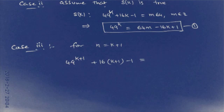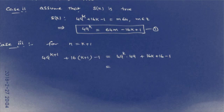Since a^(m+n) = a^m × a^n, we can write 49^(k+1) as 49^k × 49. Multiplying out 16(k+1), we get 49^k × 49 + 16k + 16 - 1, which equals 49^k × 49 + 16k + 15.